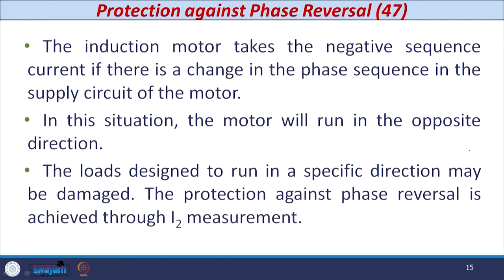The next type of protection is against phase reversal. Instead of giving RYB phase sequence, if the phase sequence is altered or changed, the motor needs to be protected. The relay number given to this protective device is 47. The induction motor takes negative sequence current if there is a change in the phase sequence in the supply circuit. In this situation, the motor will run in the opposite direction, and since the loads connected to the motor are designed to run in a specific direction only, they will be damaged if the motor runs in reverse. Protection against phase reversal is achieved with the measurement of negative phase sequence current I2.